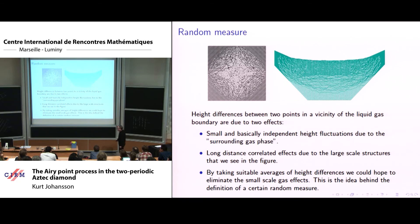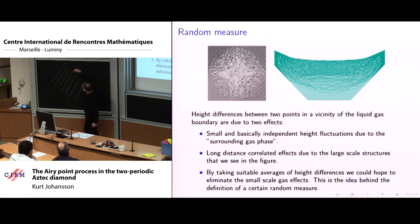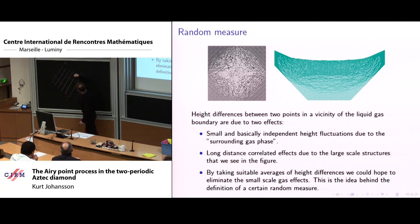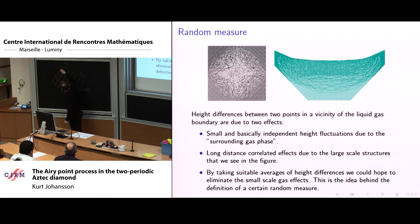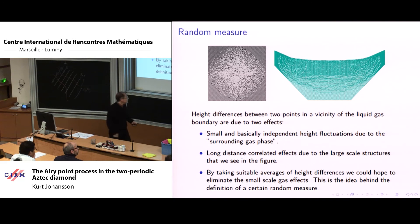The idea is to construct a random measure that converges to the Airy point process random measure, using height differences which capture long-range correlations. We take some intervals in the picture, take height differences along them with intervals sufficiently far apart so that local variations are basically independent, and average. The average height difference captures these long lines since they cut through many of the intervals as long-range structures, while local effects cancel out.